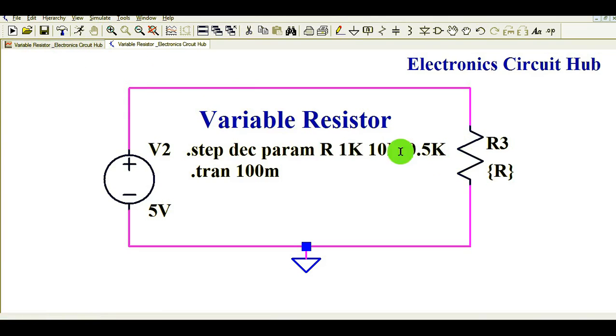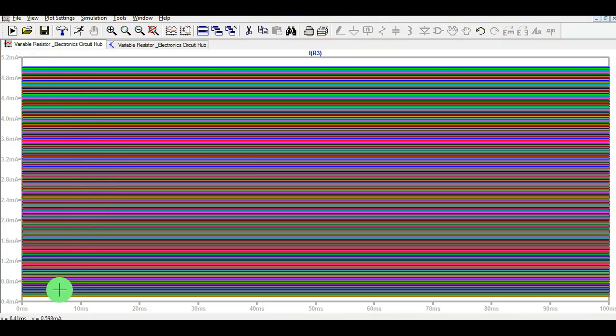When your resistance value is 1K, your current will be 5 mA, and when your resistance value is 10K, your current will be 0.5 mA.